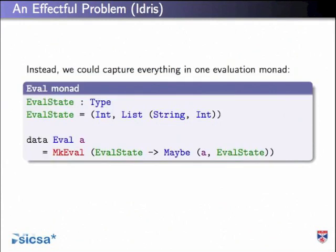Here's one possible way in Idris or Haskell. We could say this is annoying - I'm fed up of this Monad transformer stack. Let's just shove everything into one gigantic Monad that does everything. I often end up doing that in Haskell. The implementation of Idris, by the way - it's built on a couple of Monads: an elaborator Monad and a whole system Monad, and everything else is thrown into that. That's embarrassing, quite honestly. But it works.